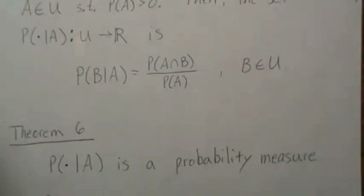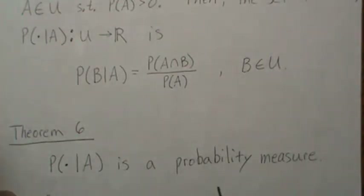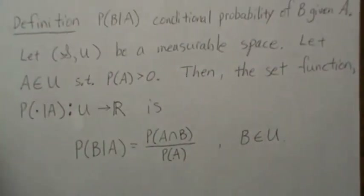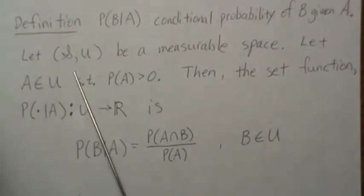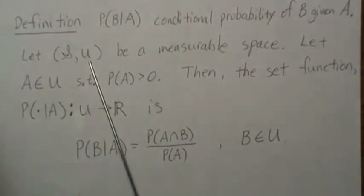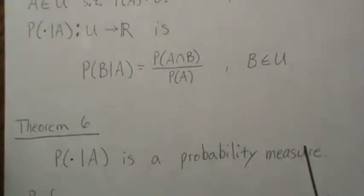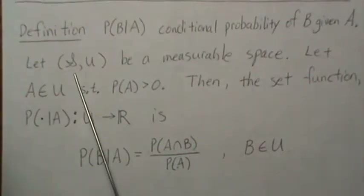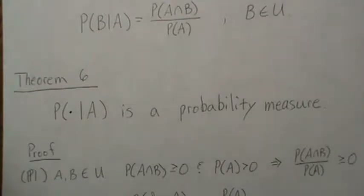Theorem 6: this conditional probability — this set function — is a probability measure. Note that to be a probability measure it has to be part of a measurable space, so it has to have a sample space and a sigma field associated with it. We're going to assume we're in this measurable space, and we just need to show that it satisfies the three conditions of a probability measure.